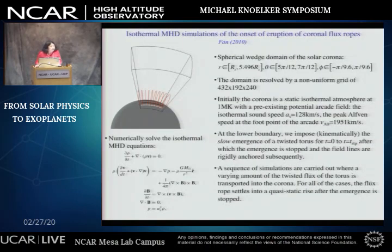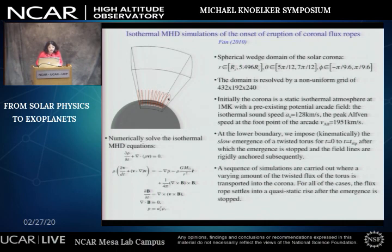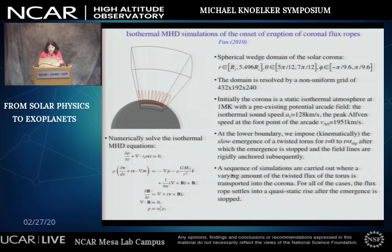To model the loss of equilibrium and eruption of a 3D coronal flux rope, MHD simulations have been carried out. Early simulations used a highly simplified thermodynamic treatment, assuming the Lorentz force dominates the dynamics. Here is an example: a set of isothermal MHD simulations in a spherical wedge domain. The domain initially consists of a static isothermal atmosphere with a pre-existing potential arcade field produced by two bipolar bands. At the low boundary, I imposed kinematically the slow emergence of a twisted magnetic torus for a period of time, after which the emergence stopped and field lines were anchored, building up a coronal flux rope structure. I carried out a set of simulations with flux emergence imposed over different amounts of time, so that different amounts of the twisted magnetic torus were transported into the corona.